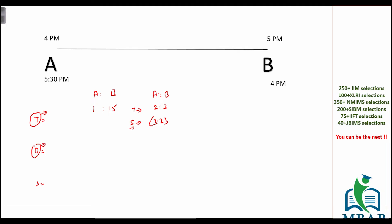Case two — distance is constant: The total distance between A and B is also constant. Since speed and distance are directly proportional, if the speed ratio is 3:2, the ratio of distance covered will also be 3:2. So at the meeting point, A will cover three-fifths of the entire journey and B will cover two-fifths of the entire journey.